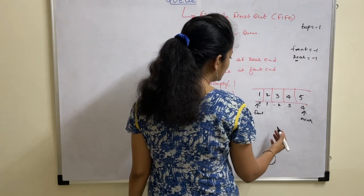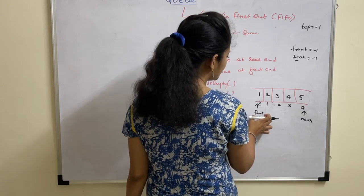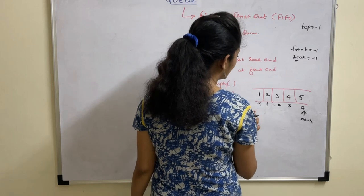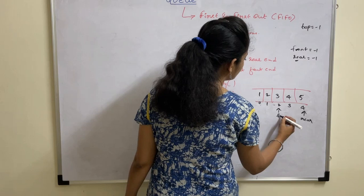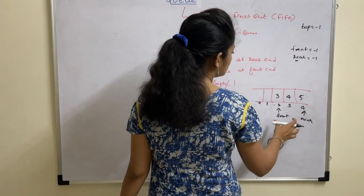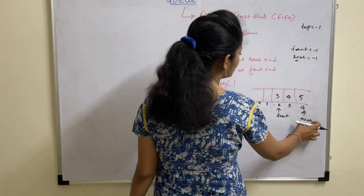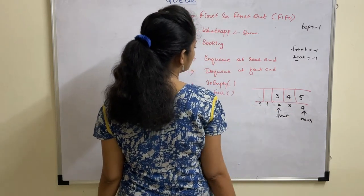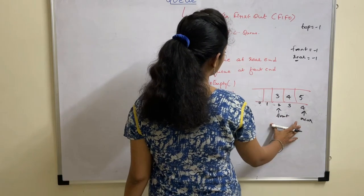For deletion, you will be incrementing the front. Say suppose you deleted values at location zero and one, then your front will be incremented to location two — these two elements are deleted. So in order to add elements into the Queue, we increment the rear value, whereas in order to delete elements from the Queue, we increment the front value. This is the logic of Queues.